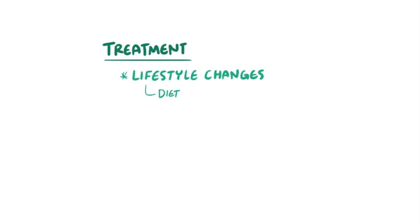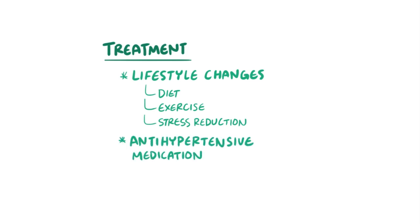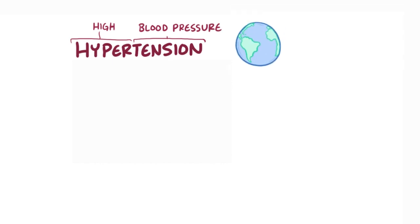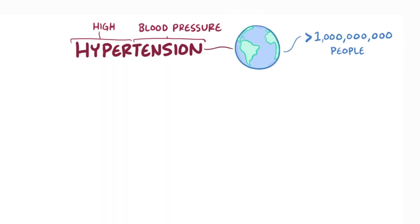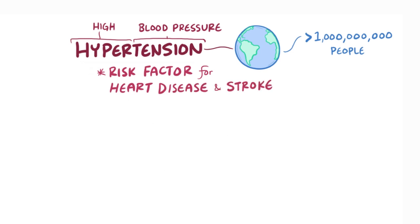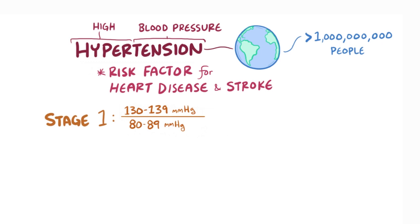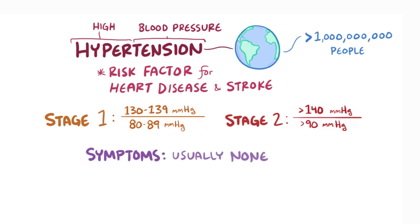The first choice for treatment of hypertension is lifestyle changes, like changes to the diet, exercise, and stress reduction techniques. In addition, there are a variety of antihypertensive medications that might be given in some cases as well. As a quick recap, hypertension or high blood pressure affects over a billion people around the world and over time is a major risk factor for heart disease and stroke. Stage 1 hypertension is defined as 130–139 mmHg for the systolic blood pressure and between 80–89 mmHg for the diastolic blood pressure, while stage 2 hypertension is defined as greater than 140 mmHg on the systolic side and greater than 90 mmHg on the diastolic side. Hypertension usually doesn't cause any symptoms, and the first line of treatment is lifestyle changes.